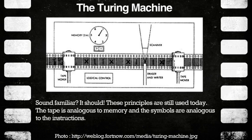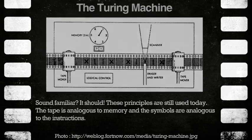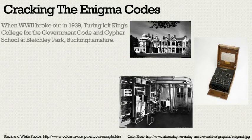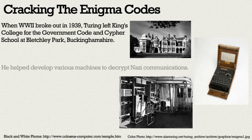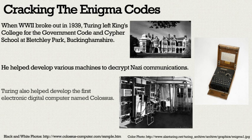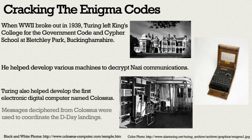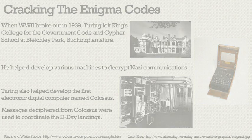The tape is analogous to memory, and the symbols are analogous to the instructions. When World War II broke out in 1939, Turing left King's College for the Government Code and Cipher School at Bletchley Park, Buckinghamshire. He helped develop various machines to decrypt Nazi communications. He also helped develop the first electronic digital computer named Colossus. Messages deciphered from Colossus were used to coordinate the D-Day landings.